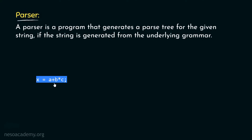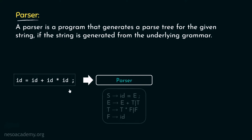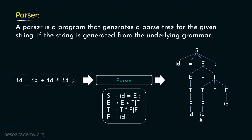After being processed through the lexical analyzer, this particular code will be converted into a string. This string will be fed into the parser, which is basically a program. The job of this parser is to generate the parse tree. The parse tree can only be generated if the string can be generated from the underlying grammar. The parser will take the string as input and, with the help of the underlying grammar, generate the respective parse tree.